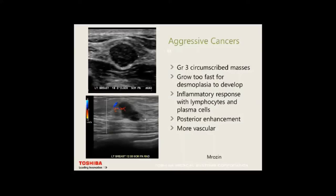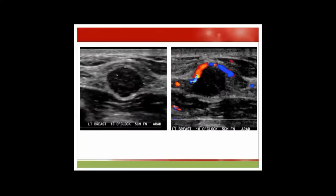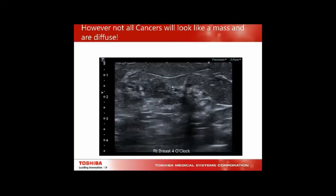This particular lesion was sitting in a breast full of cysts and was an abnormal-looking cyst. With low flow settings we detected a vascular stalk. Both were aggressive grade 3 cancers. The one resembling a fibroadenoma showed spiculated edges and a colour stalk going to it.